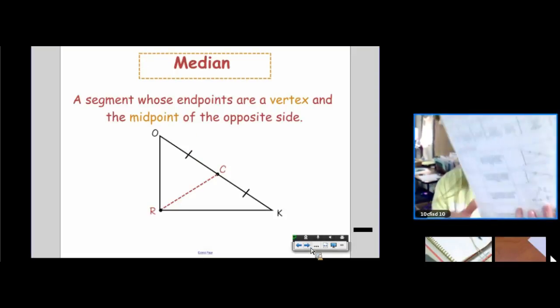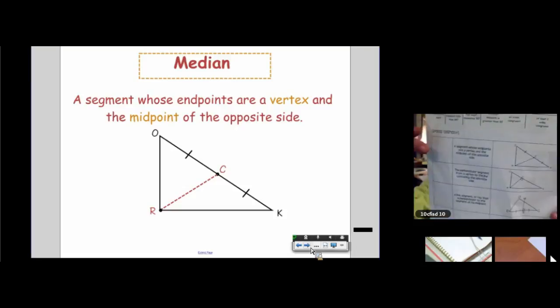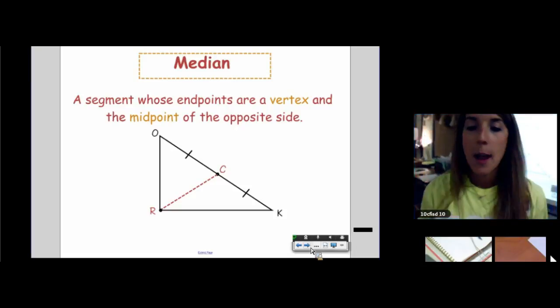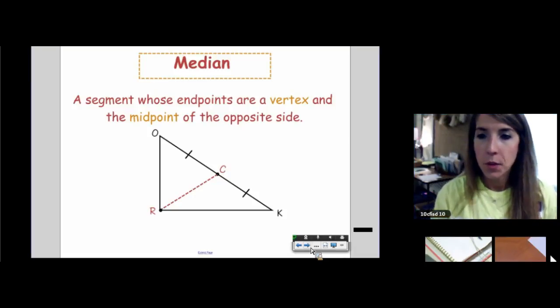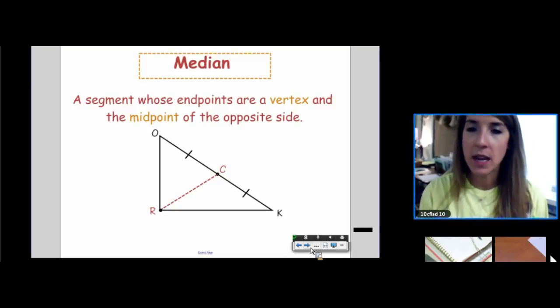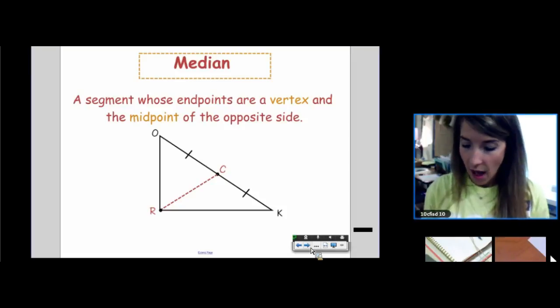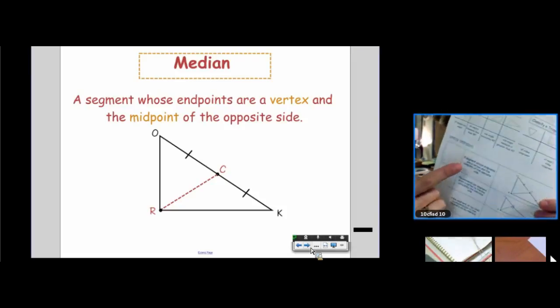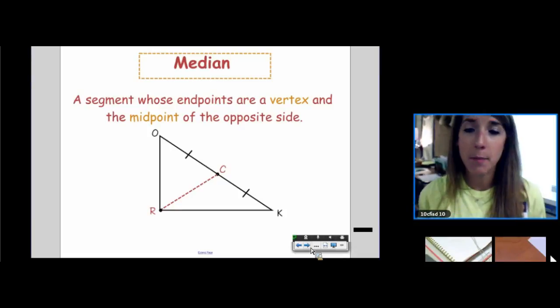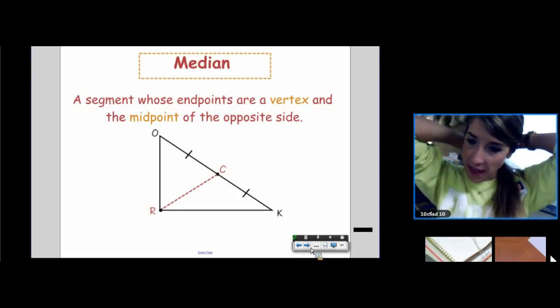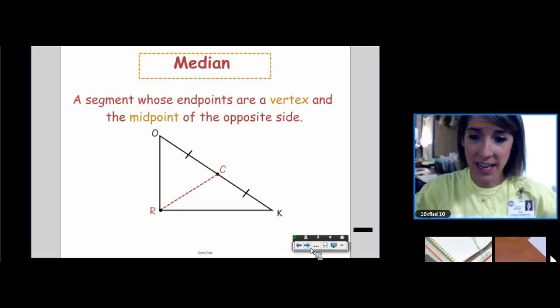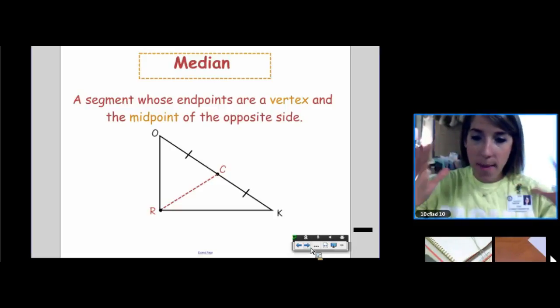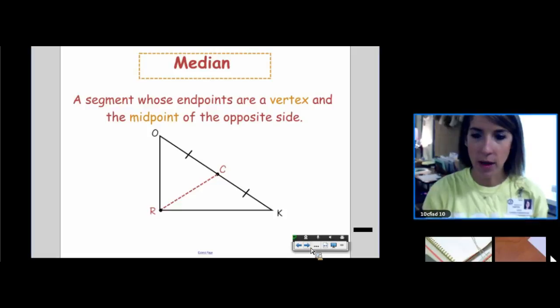The next word, we're going to go to the very first word on your special segment. Median. A median is a segment whose endpoints are a vertex and the midpoint of the opposite side. I want everyone to underline, circle, highlight the word midpoint. I want you to think median, midpoint, median, midpoint. Every time you hear median, picture Miss Anne saying midpoint, median, midpoint.